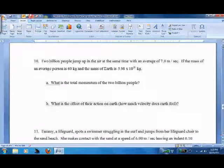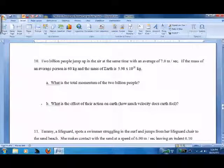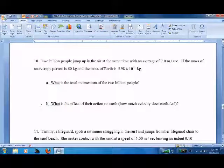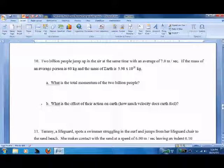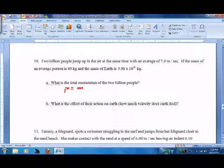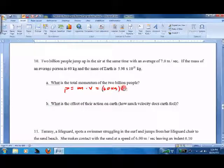So 2 billion people jump up in the air and all land at the same average of 7.0 meters per second velocity. Their average mass is 60 kg, and the mass of the earth is really, really big. So P equals the mass of all those people times the velocity. Mass is 60 kg times all those people, which is 2 billion.